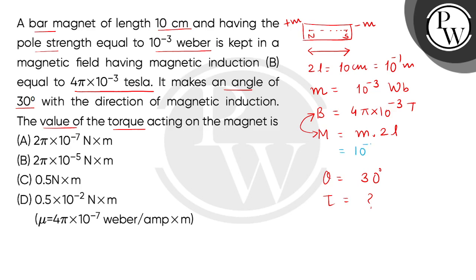Small m is 10 to the power minus 3, 2l is 10 to the power minus 1. So we will get capital M, which is the dipole moment, as 10 to the power minus 4 ampere meter square.